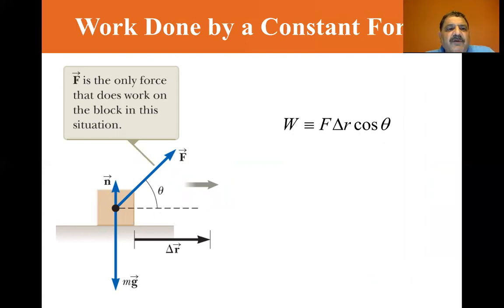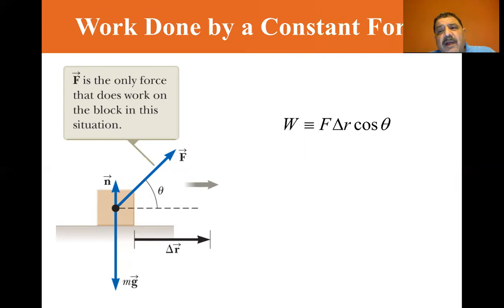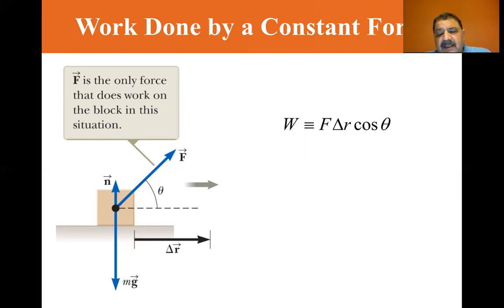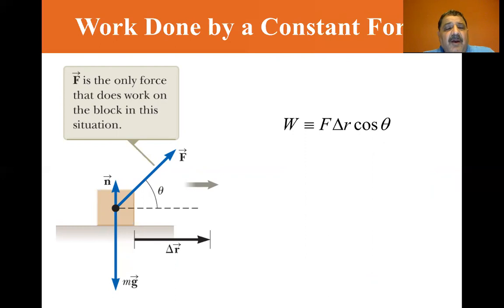Looking at this figure, the force F is the only force that does work on the block. There is mg, the gravitational force, and the normal force in the opposite direction, but the block doesn't move in those directions, so there's no work done by them. The only work done is by the force F at angle theta causing a displacement of R. If the force is perpendicular to the displacement, such as mg and the normal force, then theta equals 90 degrees, and cosine of 90 degrees equals zero — so no work is done in that direction.